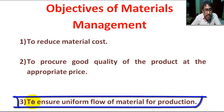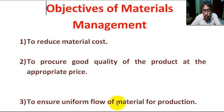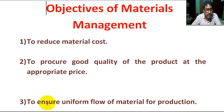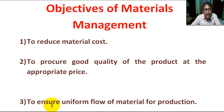Number three: to ensure uniform flow of materials for production. This means a constant supply of materials to workshop and departments in order to maintain demand and supply.